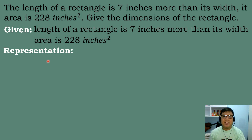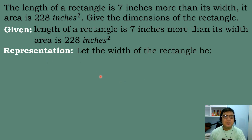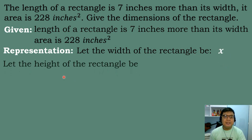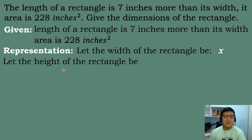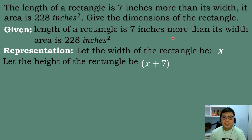After identifying the given, we need to represent the problem. We will let the width of the rectangle be equal to x, and we will let the length of the rectangle be x plus 7, since the length is 7 inches more than the width. So that's why it became x plus 7.